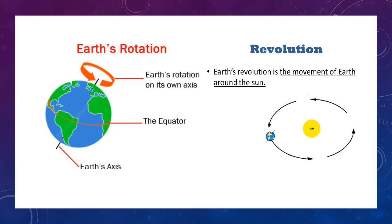The first point: rotation is the spinning movement of the earth, while revolution is the movement of the earth around the sun. Both are motions, but rotation is a spinning motion and revolution is orbital movement. The second point — direction: both are the same. The earth rotates from west to east.